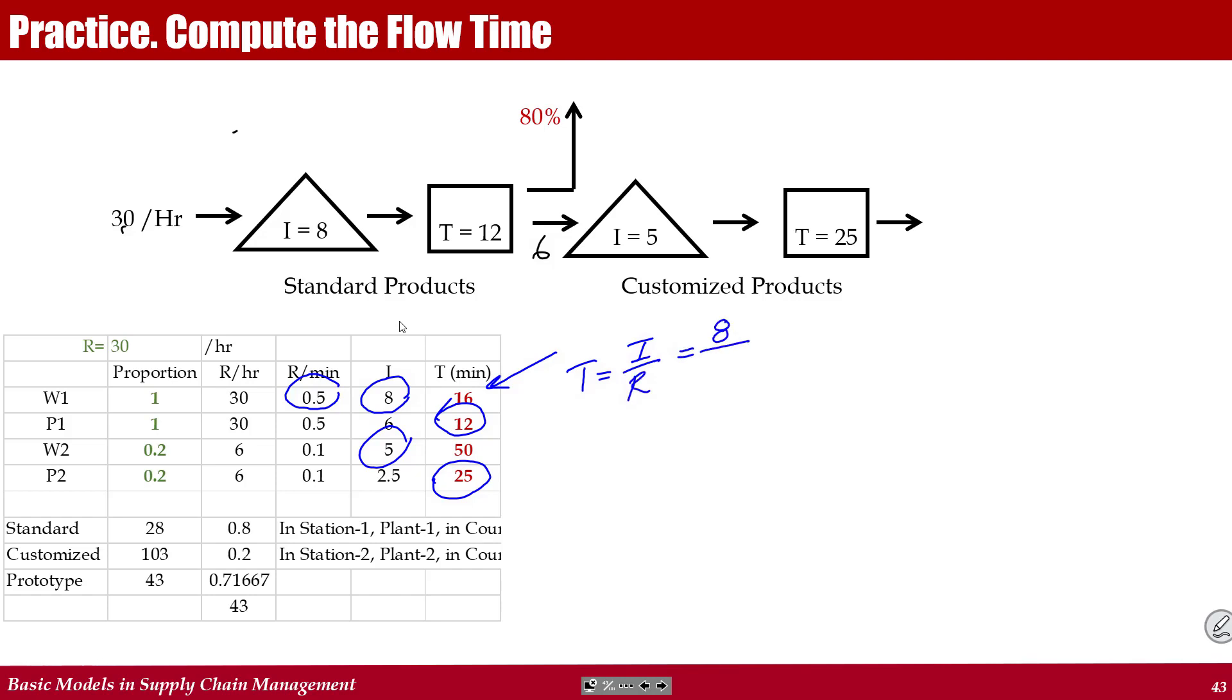Flow time is equal to inventory divided by throughput. And that is 8 divided by 0.5, which makes it 16. Here I don't have inventory, but I have flow time and I have throughput. Throughput times flow time is equal to inventory. Throughput is 0.1. Flow time is 25. Therefore, inventory is 2.5. Now, in all pieces of this system, we do have both inventory and flow time.